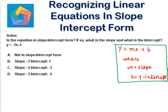Comparing our equation with the slope-intercept form: y = -3x - 4. We can see m is -3 and b is -4. So our slope is -3 and our intercept is -4, which is the answer. We can highlight that.